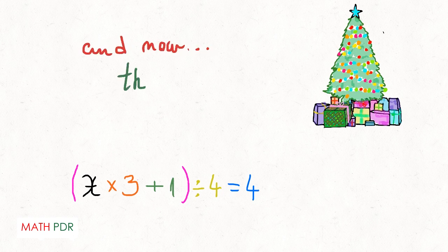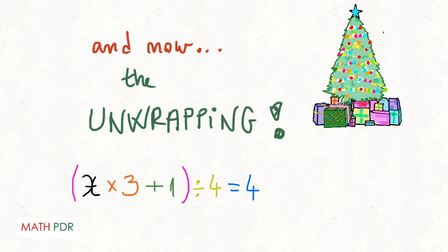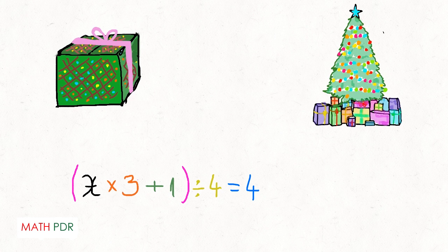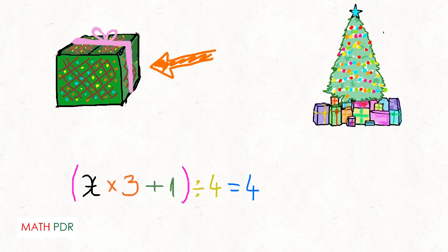And now the unwrapping. We are at the point now where we are solving the equation. We cannot undo the bubble wrap, which is inside the box, just the same as we cannot undo the multiplication of X by 3, which is inside the brackets.